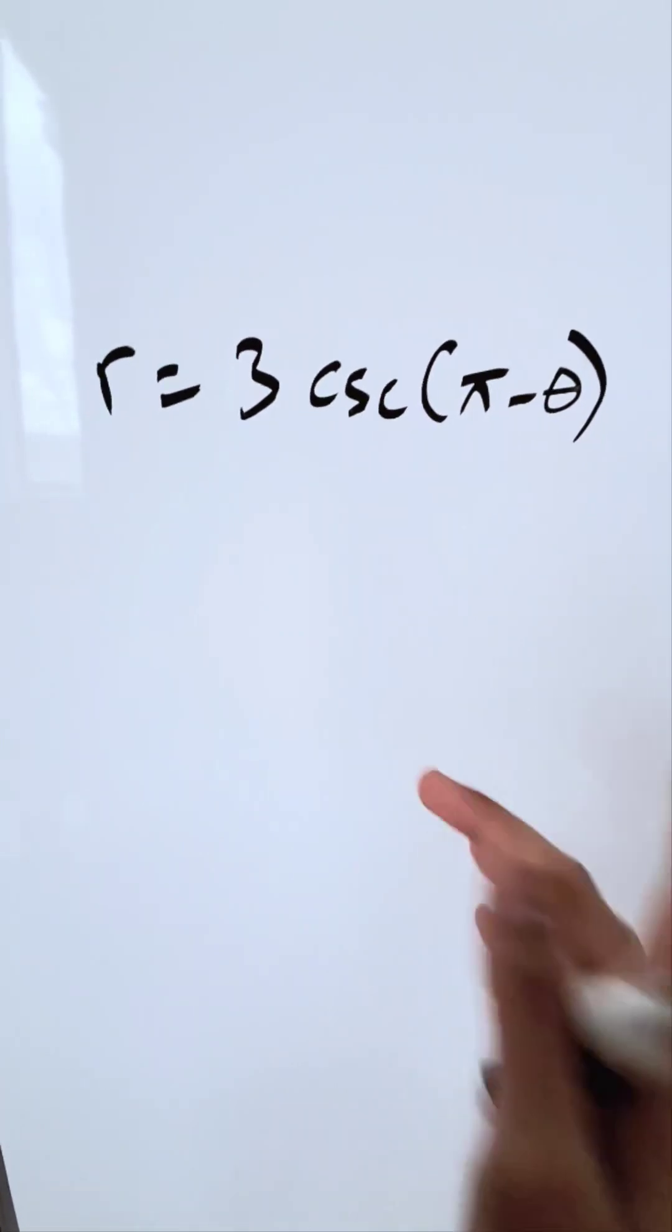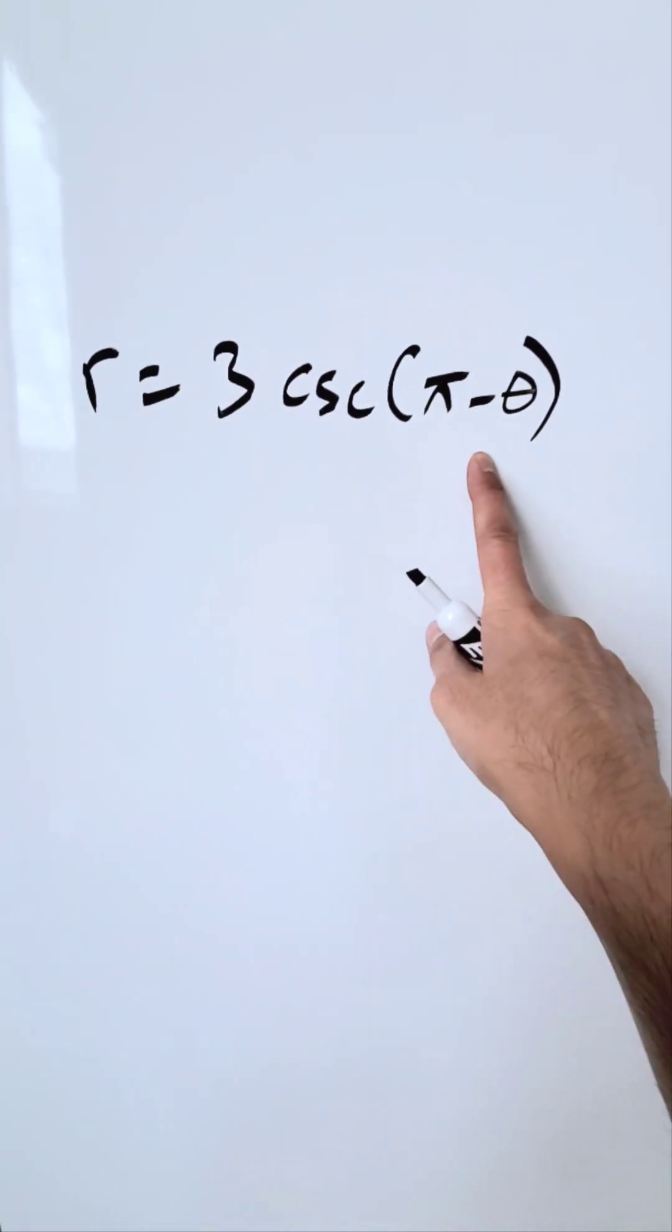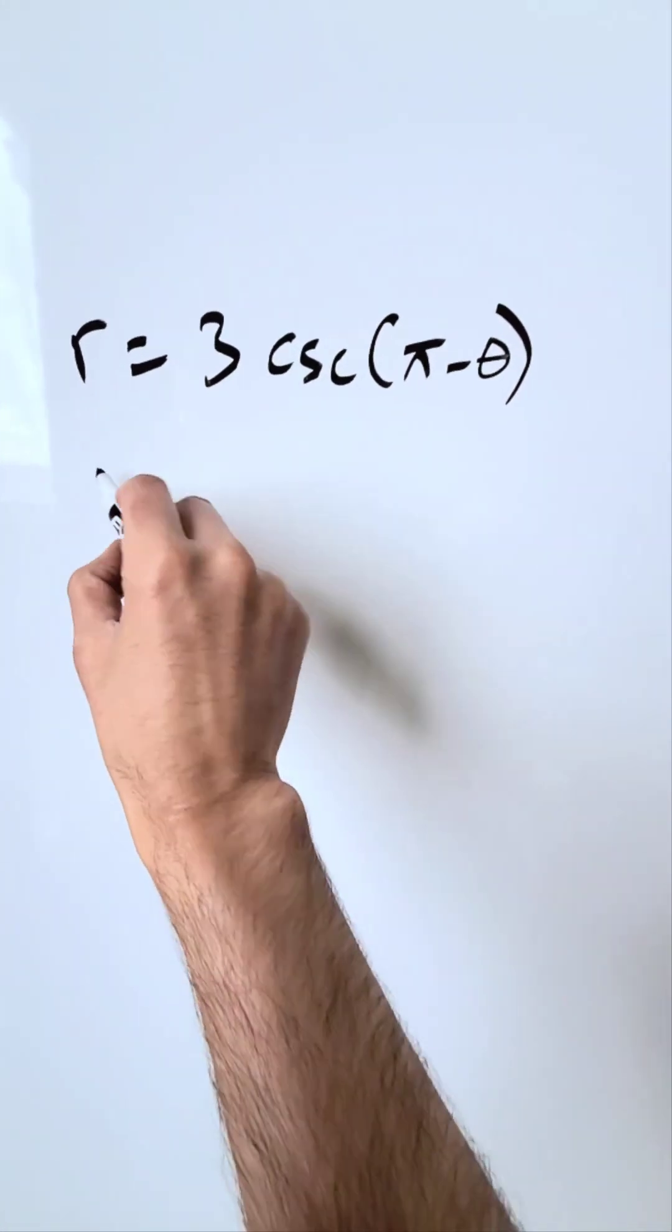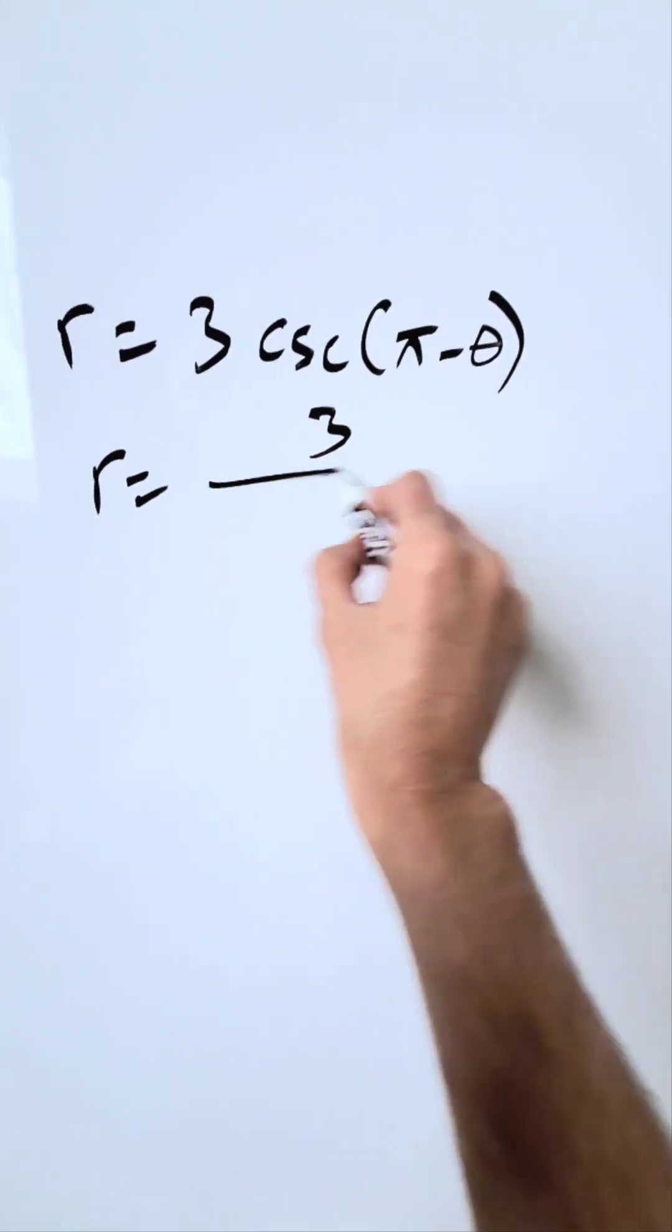I am looking over here at a polar equation: r equals 3 cosecant of (pi minus theta). But what is the Cartesian equation represented by it? Let's do it. r equals 3 divided by, let's bring in